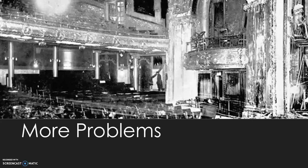They basically sold out every seat. But money is what the world revolves around, and the people running the theater decided to also sell standing room tickets, creating standing areas at the back where you don't have a seat. Obviously, no one wants to stand during an entire two-and-a-half-hour musical, so people eventually started sitting down in the aisles. There were about 2,100 to 2,200 people in the theater — we're not 100% sure because of the standing situation. There were more people than seats, and a lot of them were children. Pretty much everyone there was a family of some type.